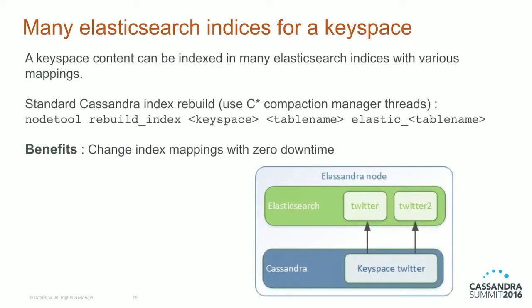Another cool feature: you can index the content of a Cassandra table in many Elasticsearch indices. For example, one index for columns A and B, another for columns B and C. This is very useful when you want to change your Elasticsearch mapping — you create a new index backed by the same keyspace with the new mapping, rebuild it using the nodetool rebuild_index command, and when rebuilt, move your index alias from the old to the new one. Done — you've changed the mapping.